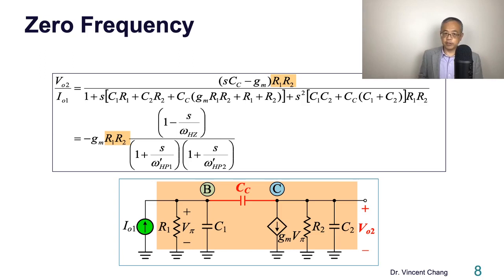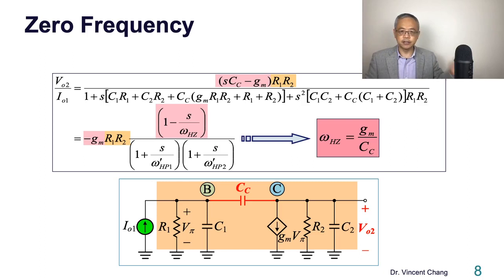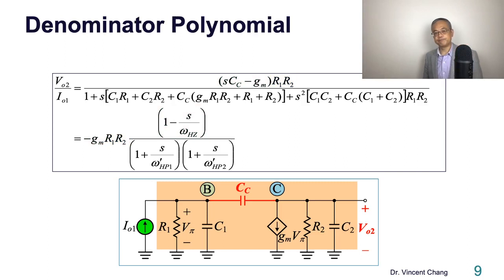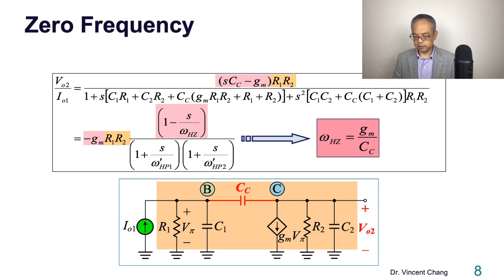This is the zero, the zero frequency. For the zero frequency, where's the zero frequency? Let's focus on the numerator. R1, R2. Let's take out negative Gm, then what do you see? You see omega Hz. So if you compare and link this red highlight together, then you solve the zero frequency: transconductance divided by compensating capacitor. Transconductance divided by the compensating capacitor.